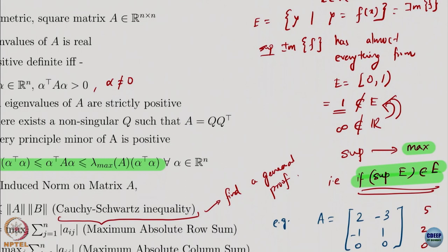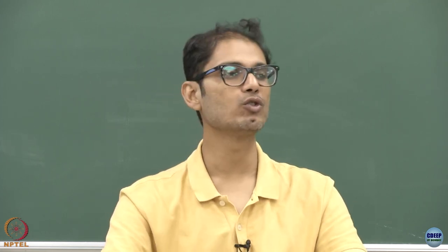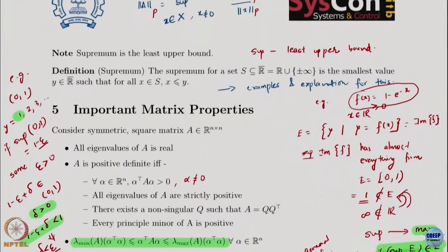When the supremum is contained in a set, folks who have done real analysis will know that if the set contains its supremum and infimum, then the set is a closed set. If the supremum and infimum of a set are in the set, then it is a closed set.